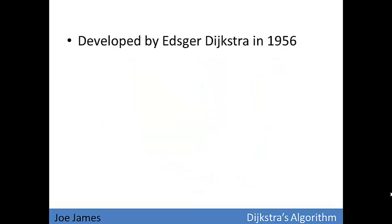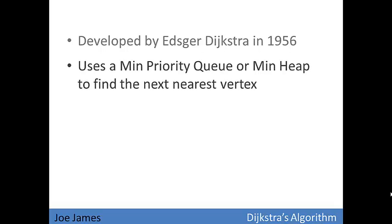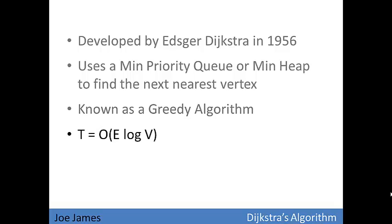So Dijkstra's algorithm was developed by Edsger Dijkstra in 1956. It uses a min priority queue or a min heap to find the next nearest vertex. It is known as a greedy algorithm because it always selects the shortest of the available options. And it runs in time big O of E log V, where E is the number of edges and V is the number of vertices in the graph.